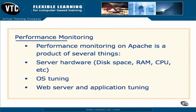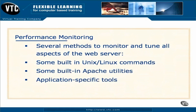Performance monitoring on Apache is a product of several different things: server hardware — including disk, RAM, and CPU — operating system tuning, and web server and application tuning. There are several methods to monitor and tune all aspects of your Apache web server, including built-in Unix and Linux commands, built-in Apache utilities, and application-specific tools.